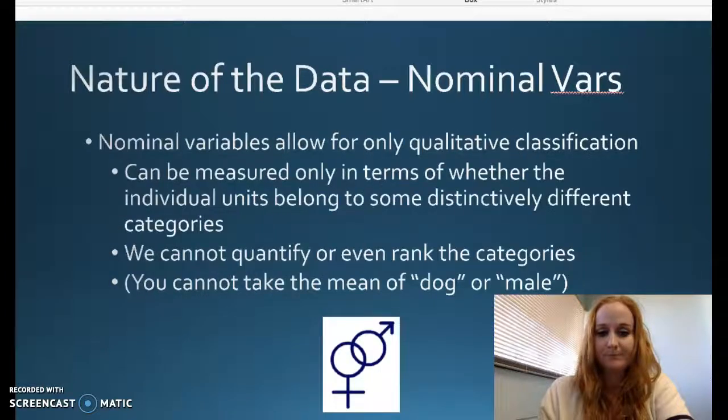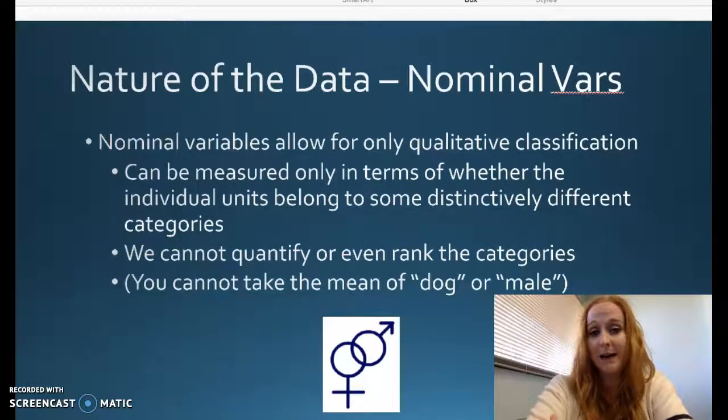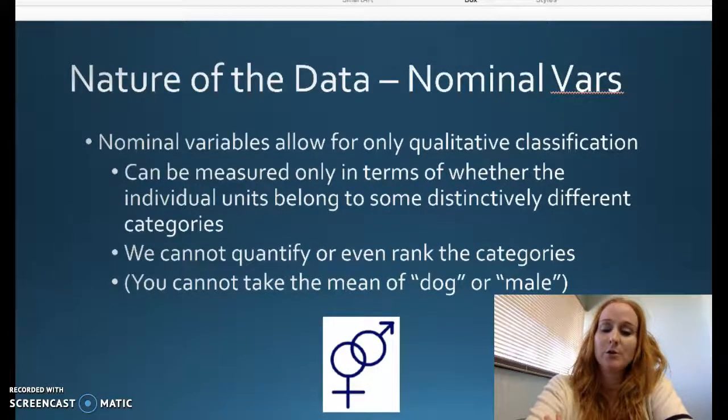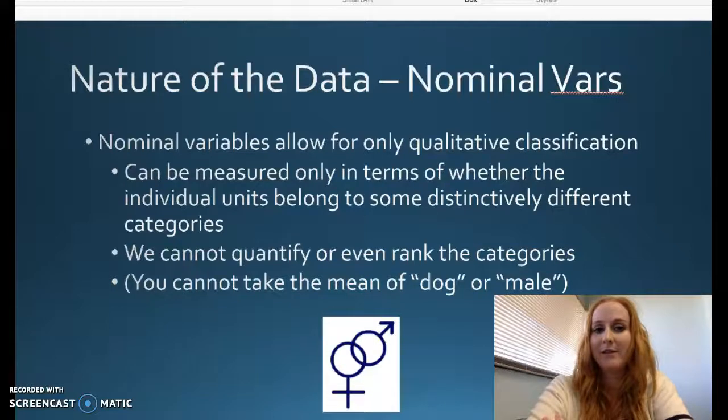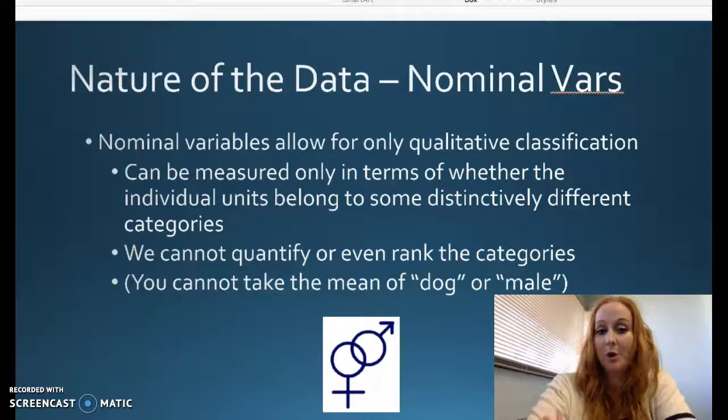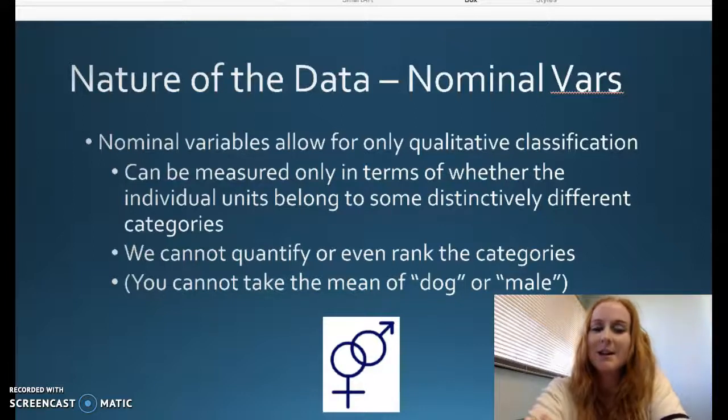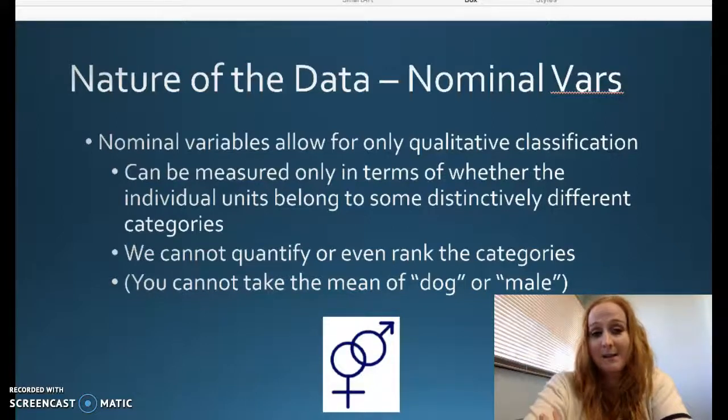With nominals, they only allow for you to classify some kind of behavior, identity, group, action of some kind. You can only measure in terms of whether that individual belongs to this group or that group or some distinctively different category. We can't even quantify or rank the categories unless we just want to know how many of the group we have. How would you take an average of a variable called gender? What is the average between male and female? You can't.